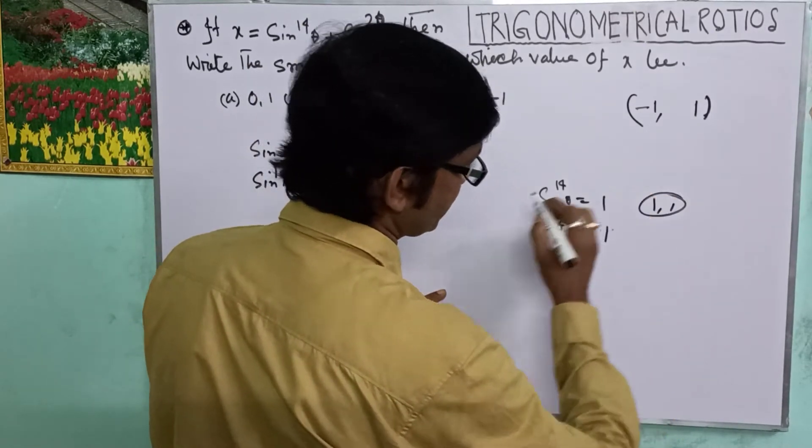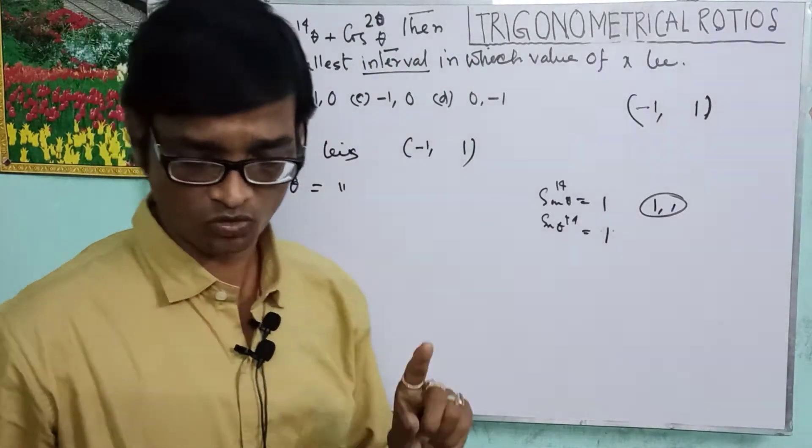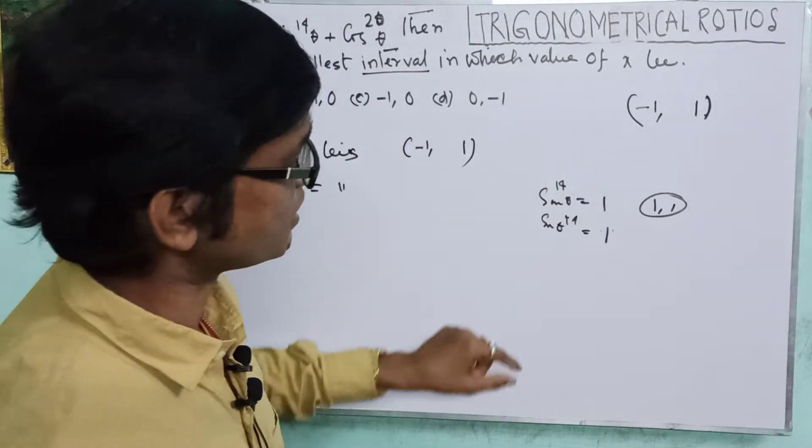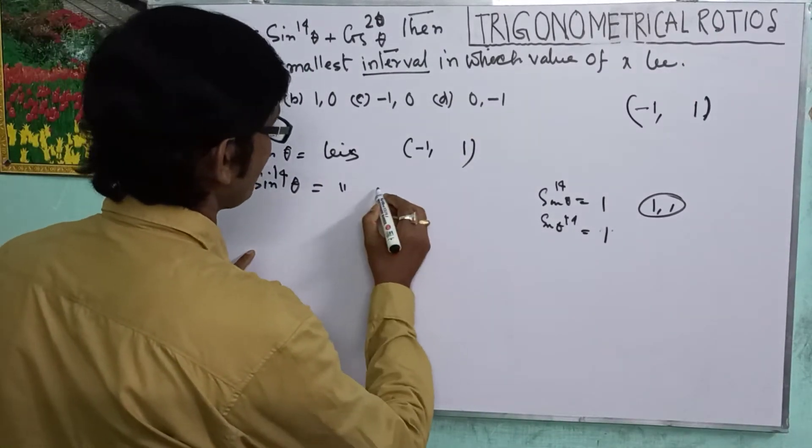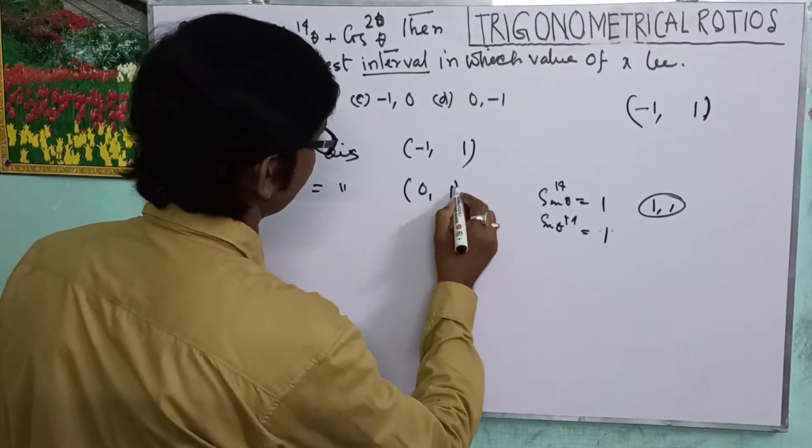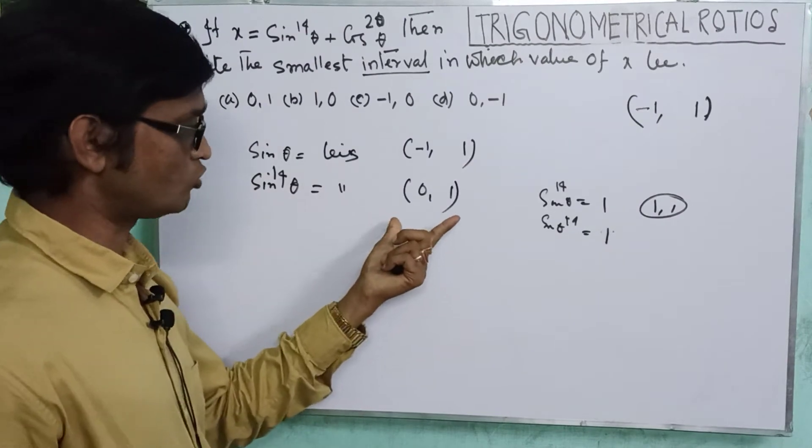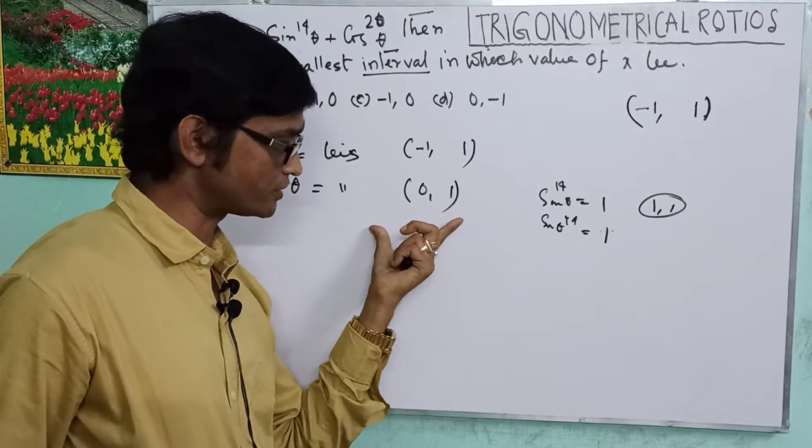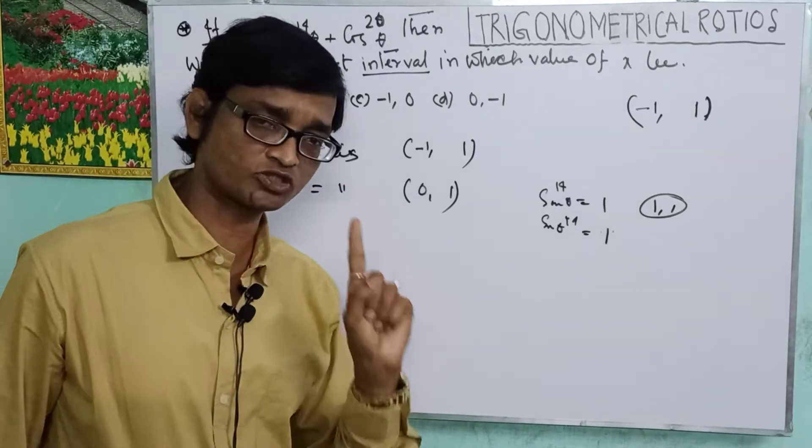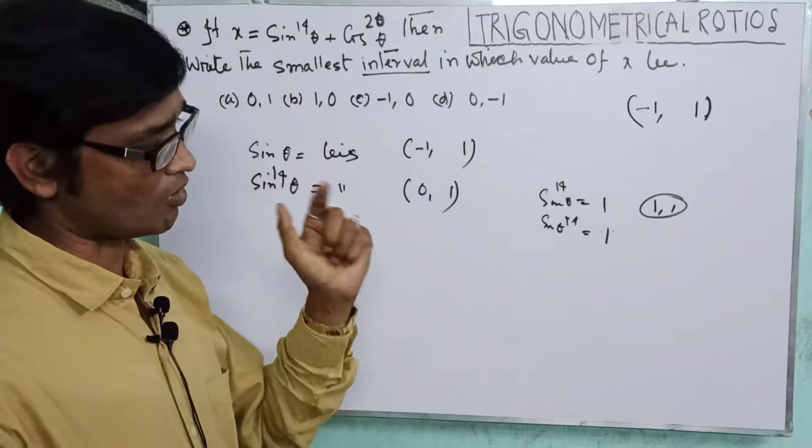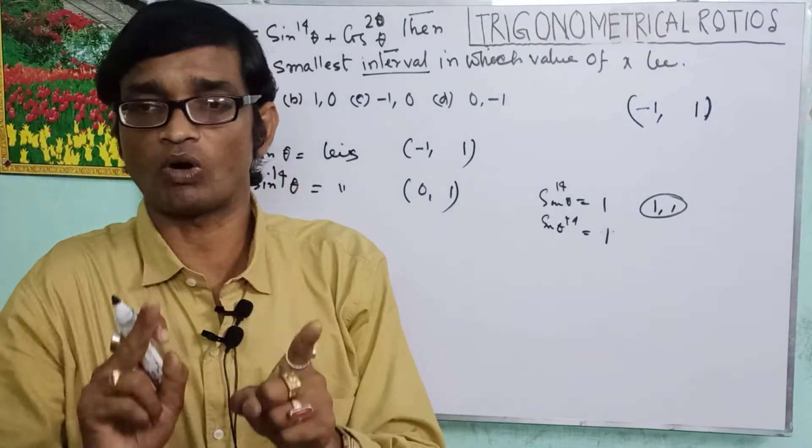Range is 0 to 1. When sin theta is minus 1, sin squared becomes 1. So the range is 0 to 1.